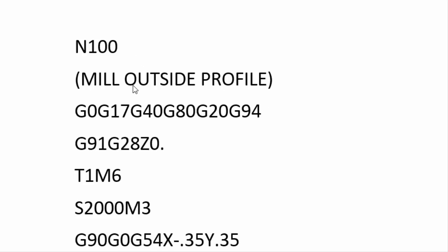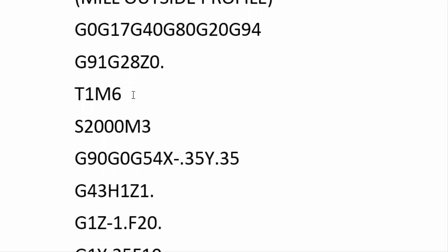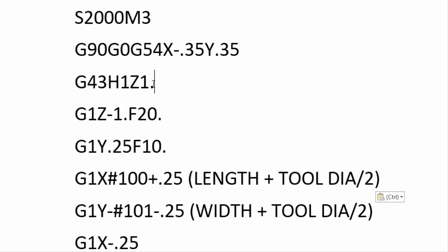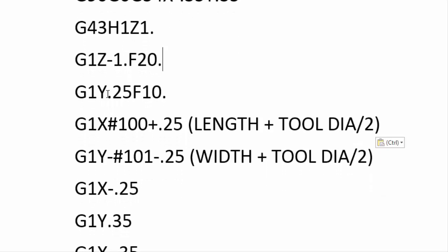At N100 we begin the actual machining — milling the outside profile first. We start with the safety line, rapid home in Z, make a tool change, and turn the spindle on. We rapid to G90 G0 G54 X-0.350 Y0.350 as our approach point — the same on all four parts since the origin is in the upper left corner. Using a half-inch end mill we are at a safe distance from that corner. We call tool offset G43 H1 Z1 inch, then feed G1 to Z minus one inch at F20. The first move is G1 Y0.250 — 250 thousandths away from the first edge, programming to the center of the tool.